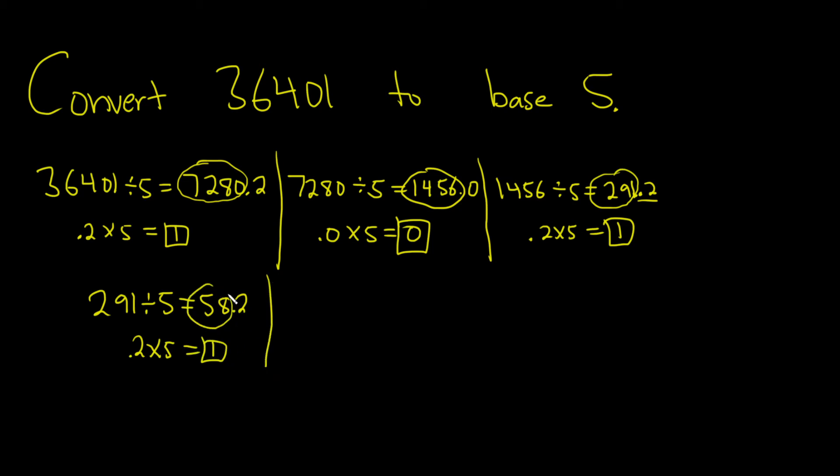Then you do it again. So 58 divided by 5. You just keep dividing by 5. You stop whenever this number is a 0. So let's see. 58 divided by 5. 11.6. And you could do it in your head, by the way. Look, 5 goes into 58 eleven times, right? And then 3 is left over. So the remainder is 3.